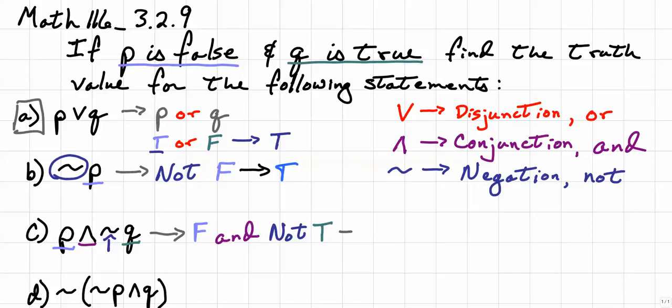So we will have false AND NOT true, which means that this can be rewritten as false AND false. And since both of them are false, the truth value of this whole thing will be simply false.